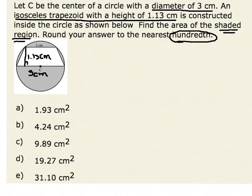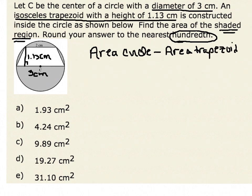In order to find the area of the shaded region, we would first find the area of the circle and subtract the area of the trapezoid. We recall that the area of a circle is given by pi times the radius squared, and the area of a trapezoid is given by one-half times the quantity of base 1 plus base 2, times the height.